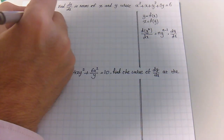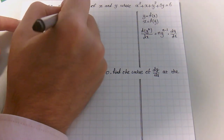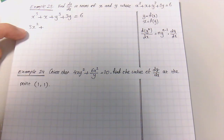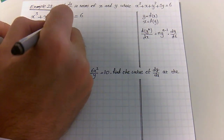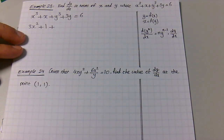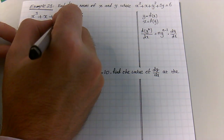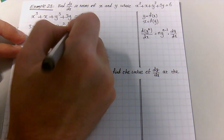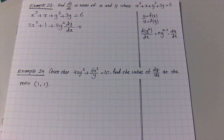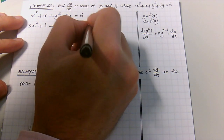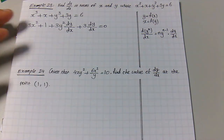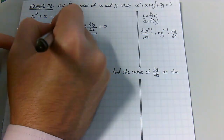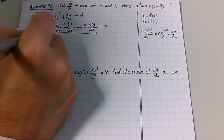Let's go through the example: x³ + x + y³ + 3y = 6. Differentiation of x³ with respect to x is 3x², plus differentiation of x is 1, plus differentiation of y³ — we differentiate it as we would x³ giving 3y², but since we are differentiating with respect to x we multiply by dy/dx — plus differentiation of 3y is 3, and again with respect to x it becomes 3·(dy/dx). Differentiation of 6 equals 0.